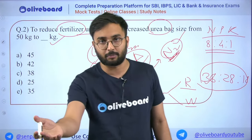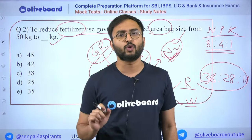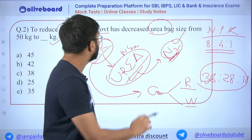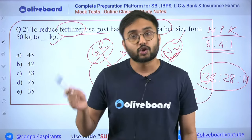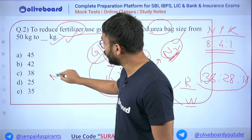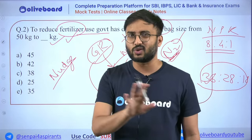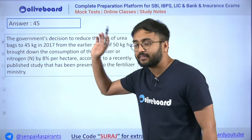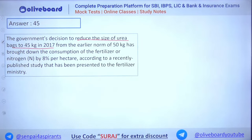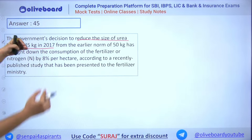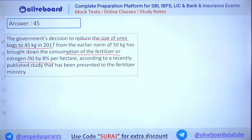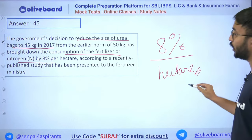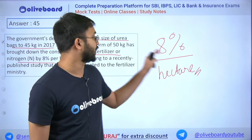Psychologically, farmers won't stop buying urea even if told it's harmful long-term — they want profit now. This is a nudge mechanism: instead of banning urea, reduce the bag size. The government reduced from 50 kg to 45 kg in 2017, which brought down nitrogen consumption by 8 percent per hectare.